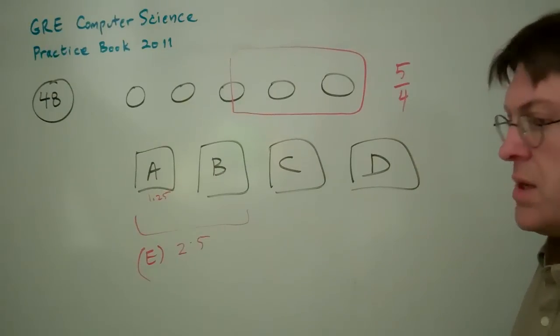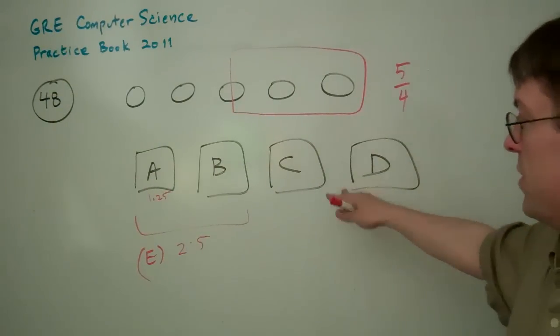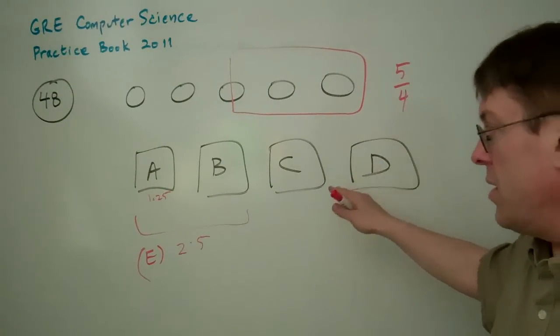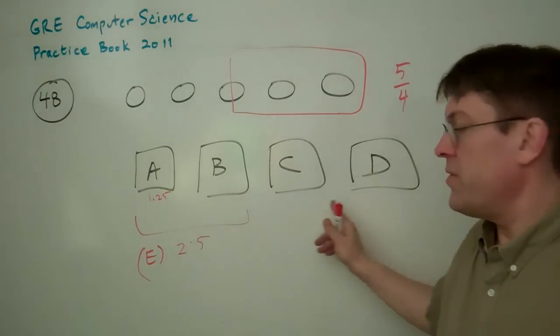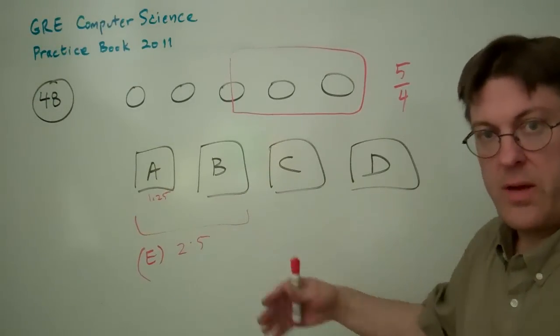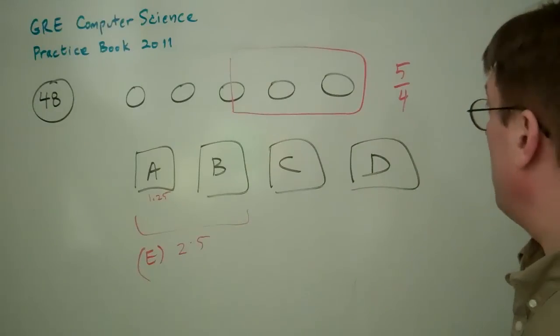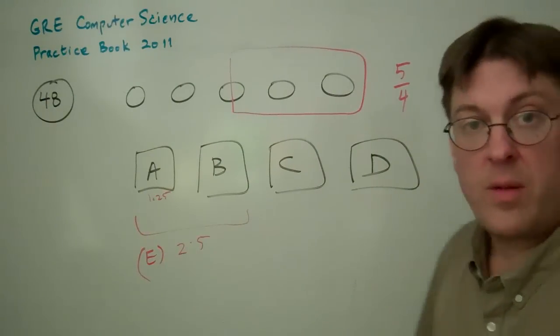But basically, if you put all those balls into these boxes, odds are there'll be 1.25 in each one of these things. On average, it'll average up to that much. So, hopefully that's helpful.